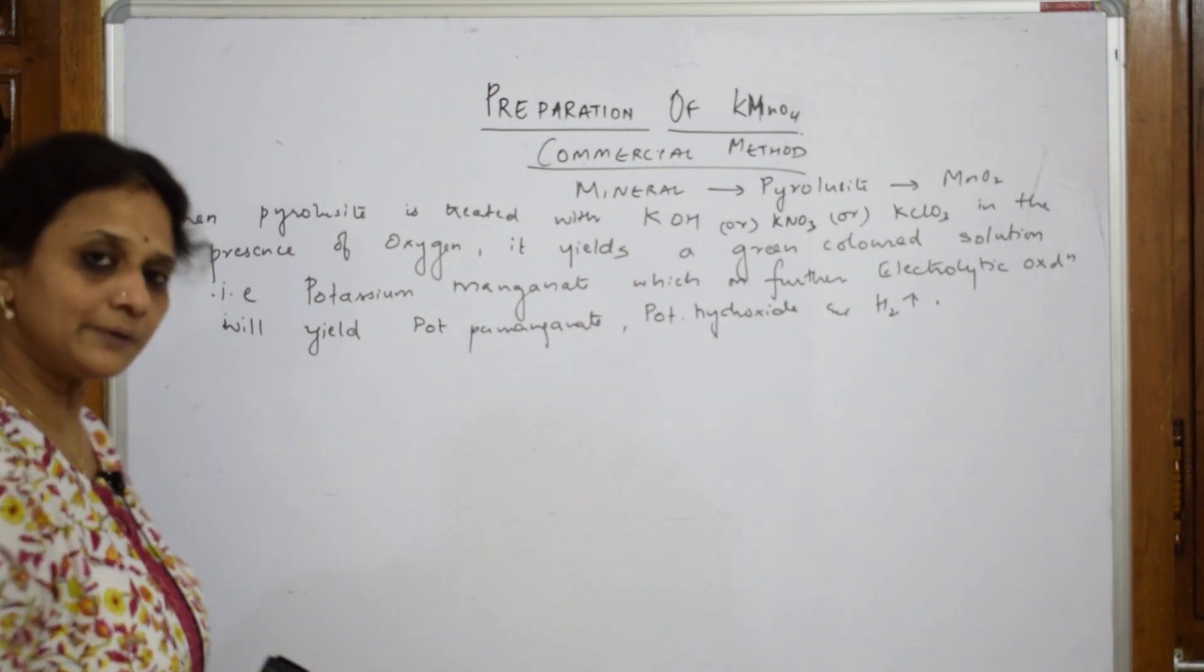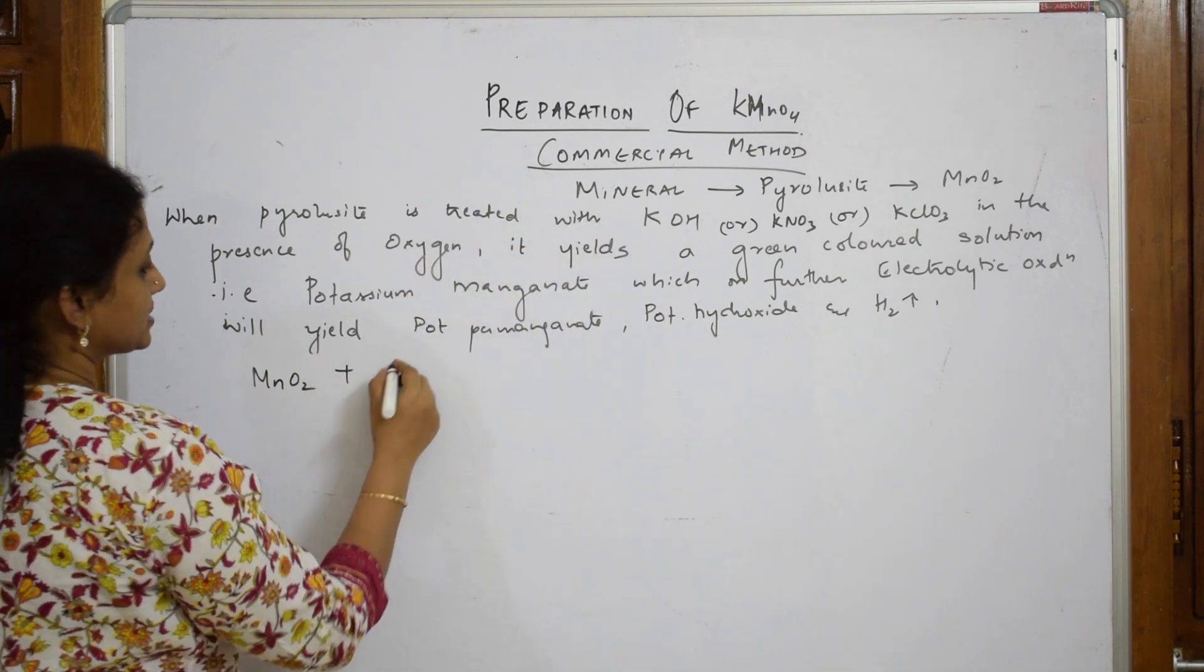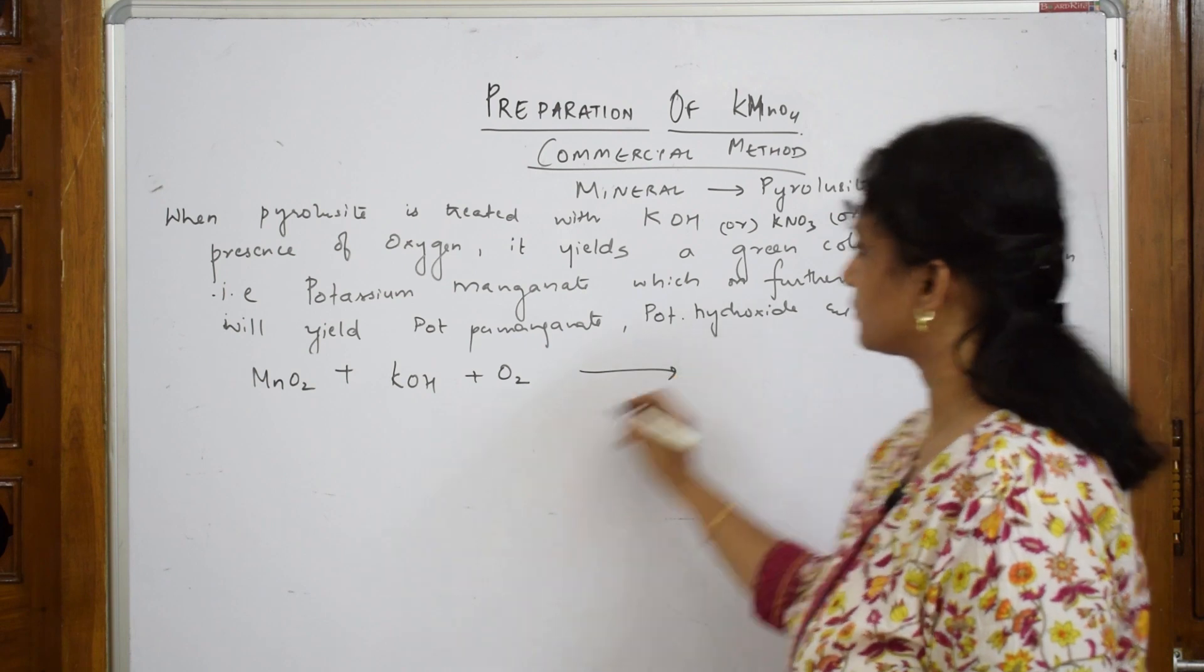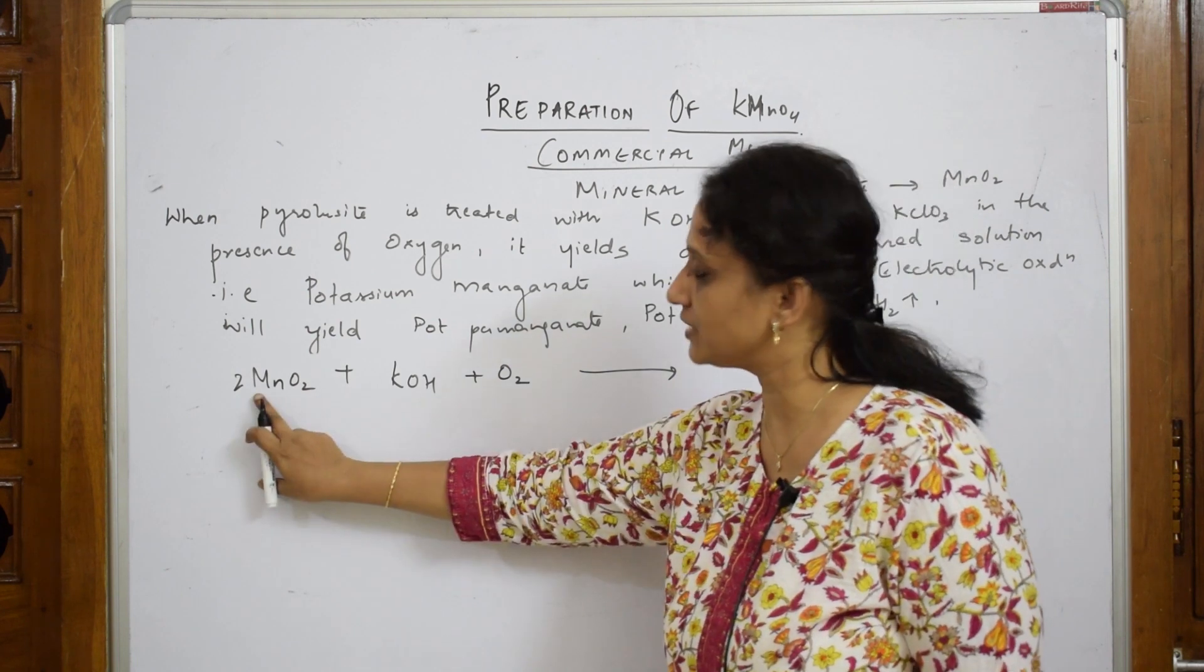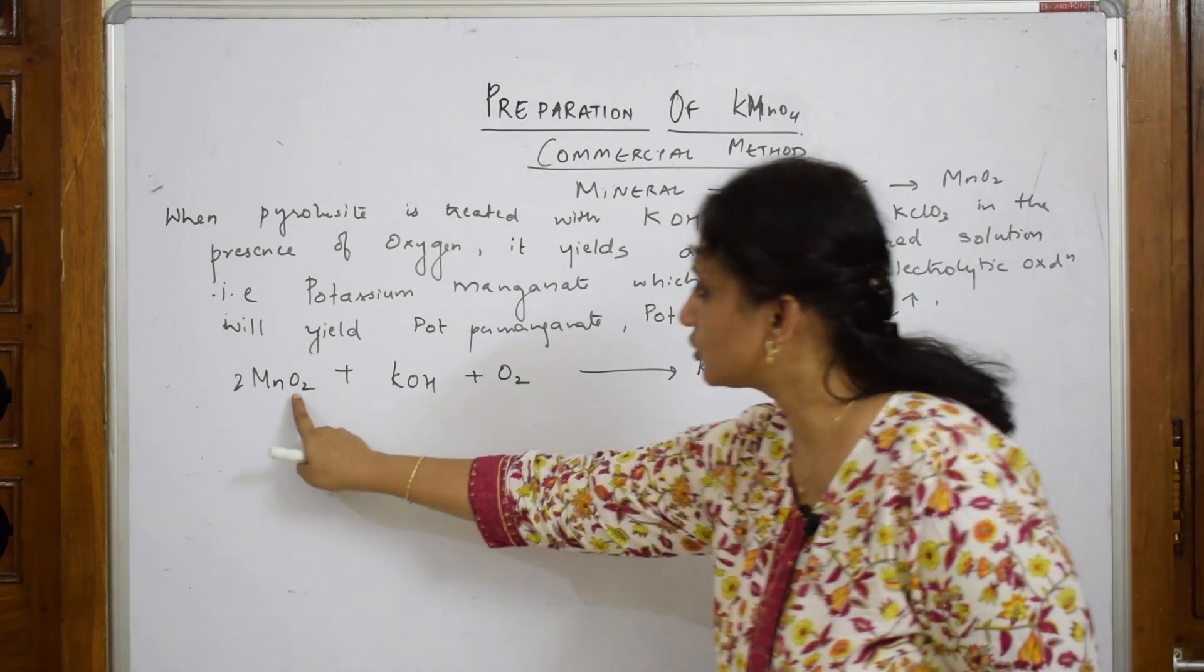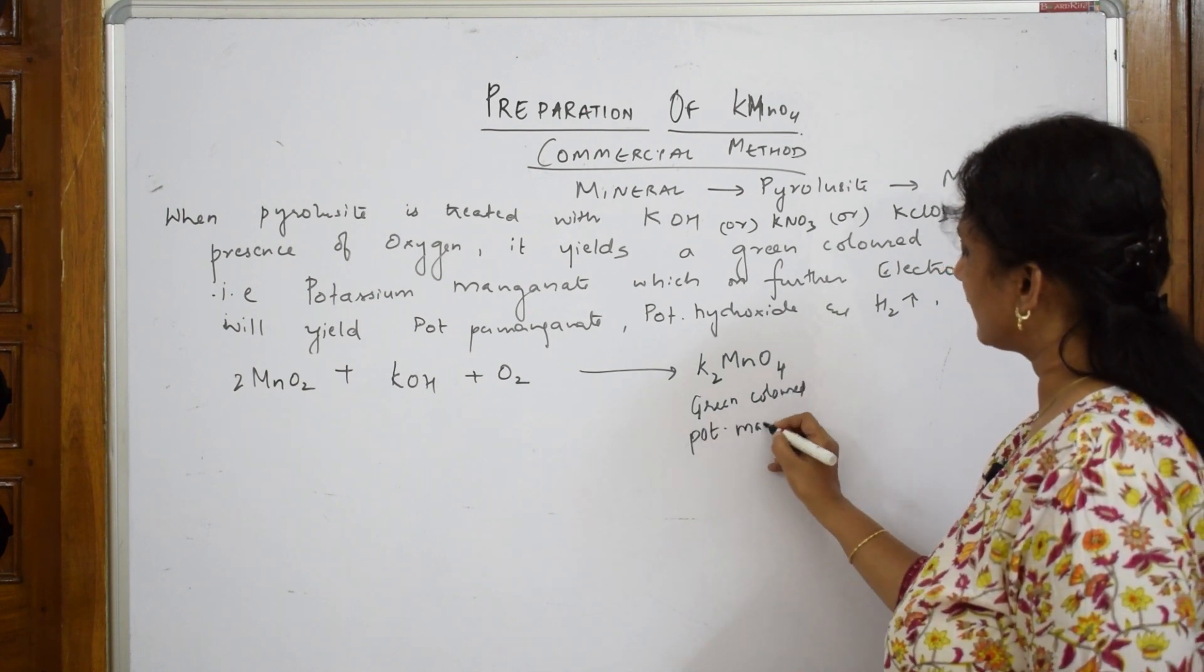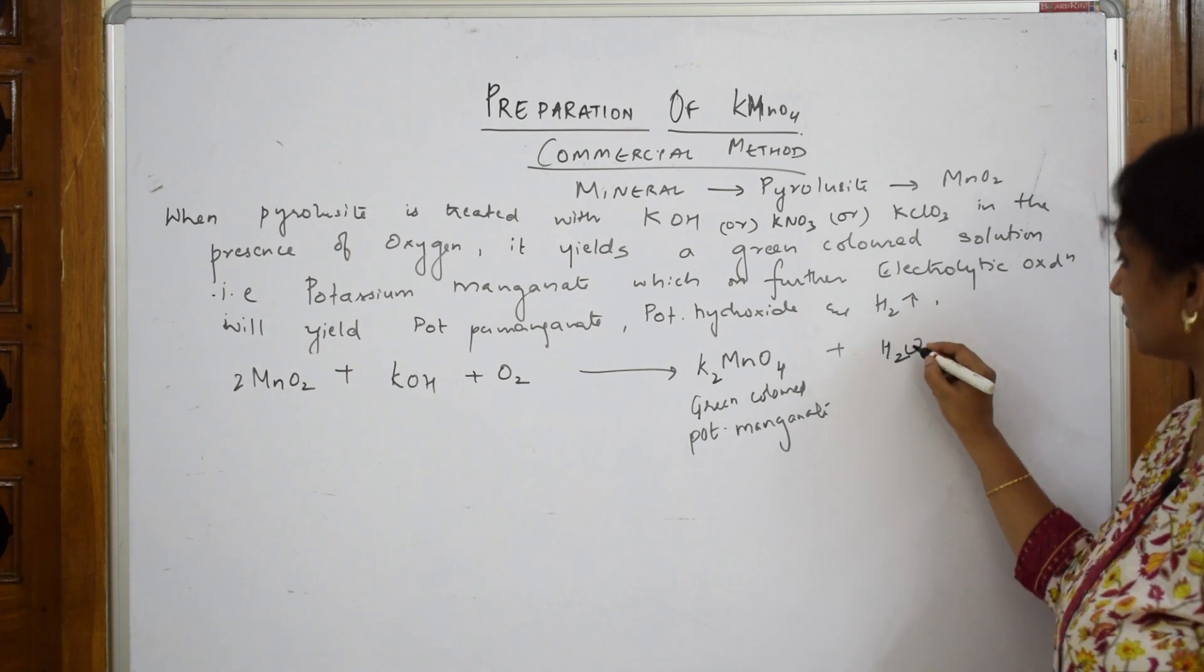Pyrolusite is MnO2. I'm going to add a base, potassium hydroxide is a strong base. Now I'm going to roast it in the presence of oxygen. When you're roasting in the presence of oxygen, suppose if I take this as two moles, this potassium hydroxide is going to react with this and forms a salt, that is K2MnO4. This is a green colored solution which is formed, and this is called potassium manganate along with water.